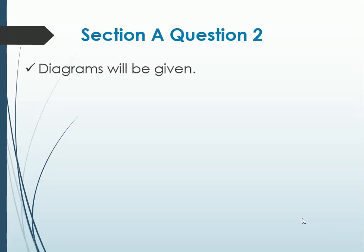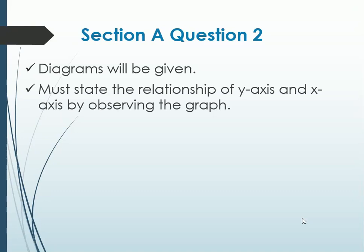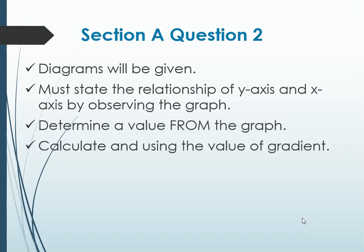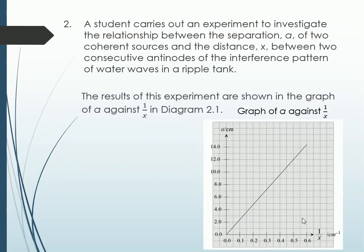Question 2, normally a graph is given to you, with a reading with values on it and the line of the graph is already given. So you must state the relationship of y-axis and x-axis just by observing the graph. You have to determine a value from the graph. You have to calculate the gradient and you have to use the value of the gradient that you calculated. And lastly, you have to state a precaution. So let's start.